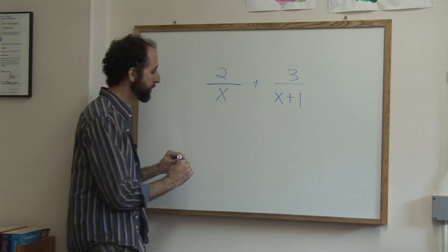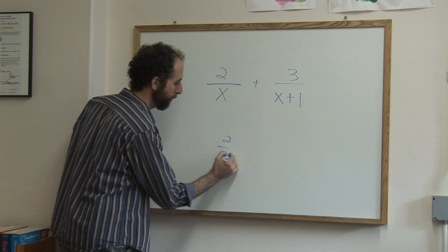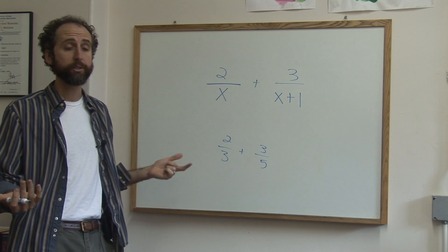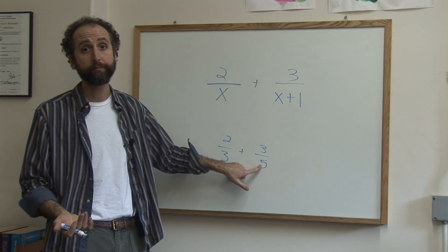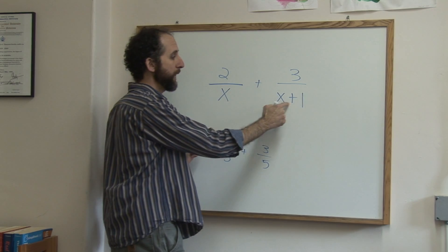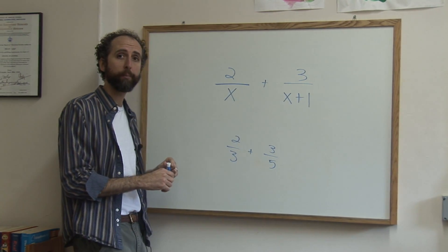So the common denominator, just like you remember how if we do two thirds plus three fifths, one way to get a common denominator is to say well three times five is fifteen. We're going to do the same thing here. We're going to say x times x plus one is going to be our common denominator.